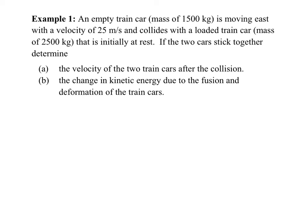If trains physically collide at high speed, the front crumples in — just like car front ends crumple to absorb energy to protect the driver. Now for the problem: mass A is 1,500 kg moving east at VA0 = 25 m/s. Mass B is 2,500 kg at rest, VB0 = 0.